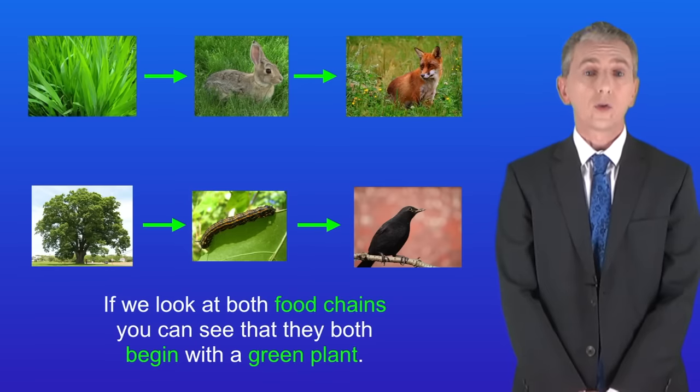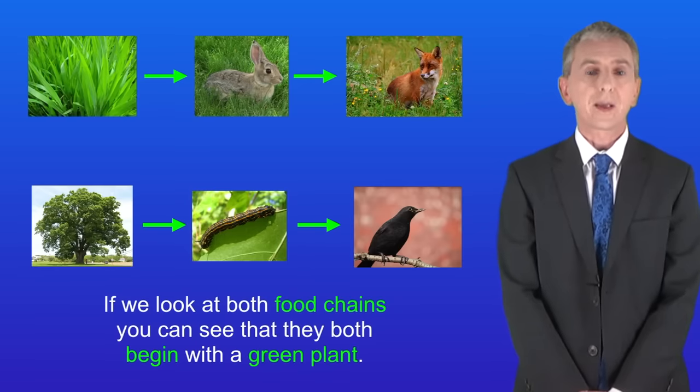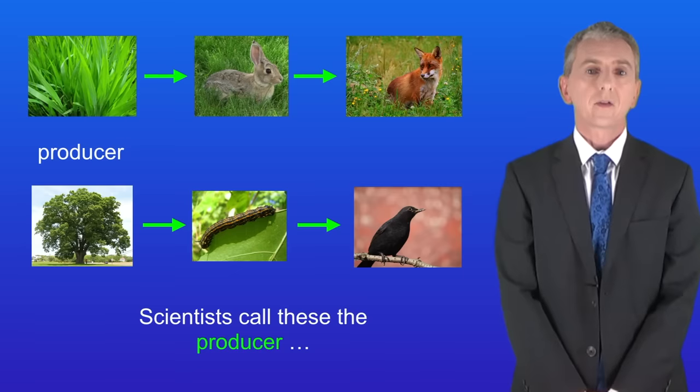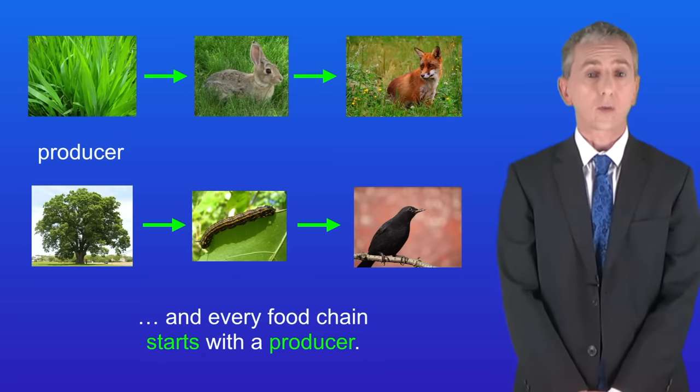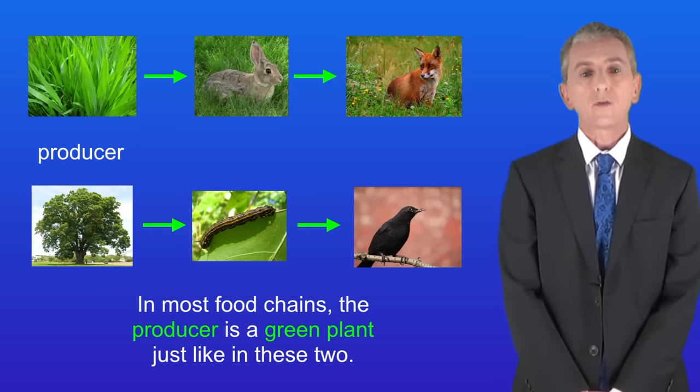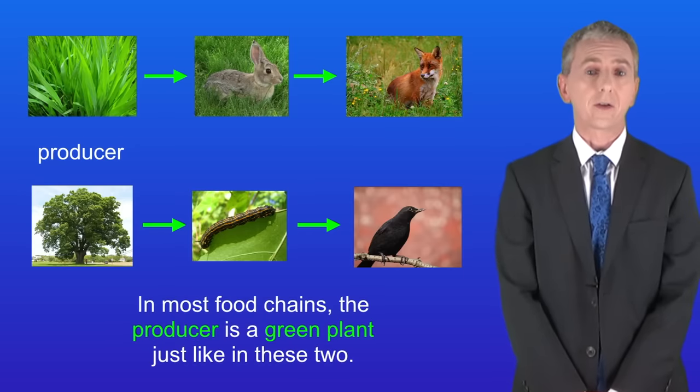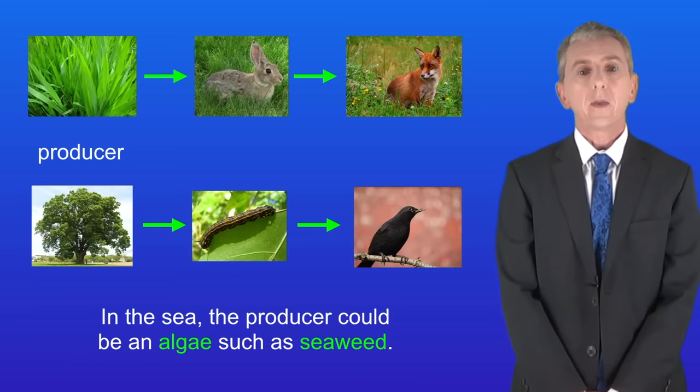Now if we look at both food chains you can see that they both begin with a green plant. Scientists call these the producer and every food chain starts with a producer. In most food chains the producer is a green plant just like in these two. In the sea the producer could be an algae such as seaweed.